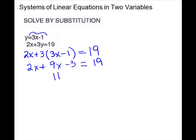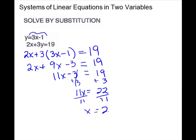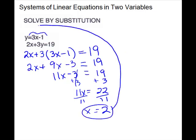Put your x terms together: 11x minus 3 equals 19. Add your 3 to both sides. So 11x equals 22, and divide by 11. So x equals 2. Now take the 2 and plug it back into that equation. So we have y equals 3 times 2 minus 1, which is 6 minus 1, equals 5. So our solution is (2, 5).